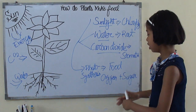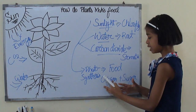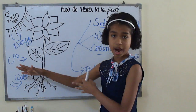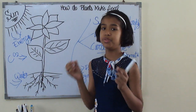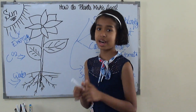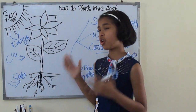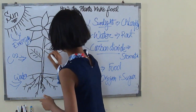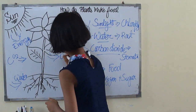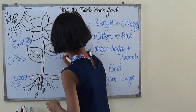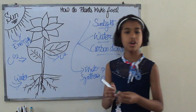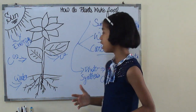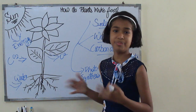Oxygen is then pushed out from the plants with the help of the stomata. Oxygen is thrown out from the plant, and we breathe it.